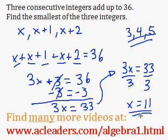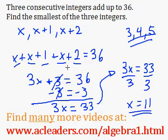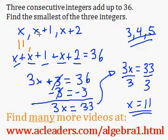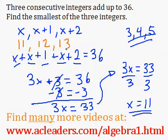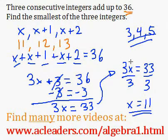And that is the smallest of the three integers. If you'd like to check, we could check. The first integer would be 11, the second one would be 11 plus 1, so 12, and 11 plus 2, so 13. 11 plus 12 plus 13 equals 36. So we're right, and that is our final answer.